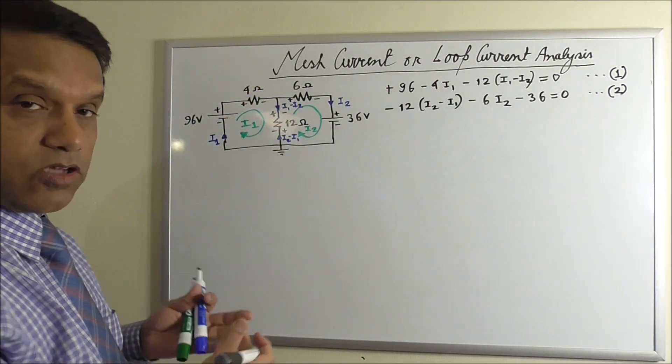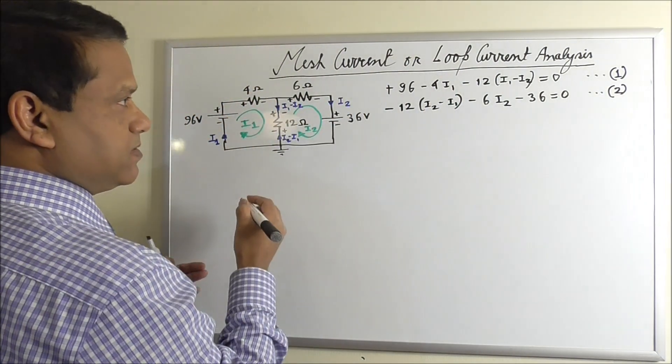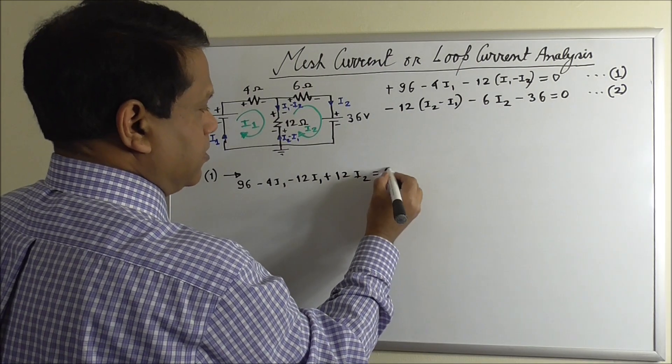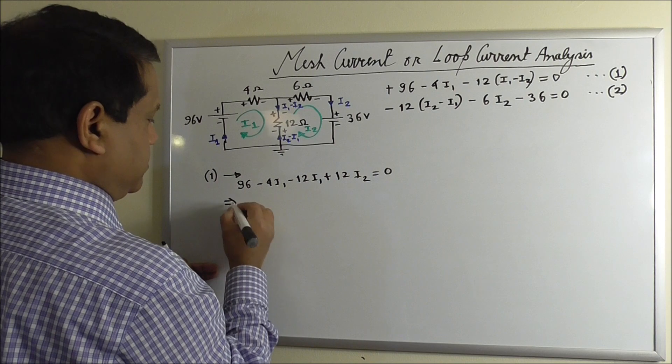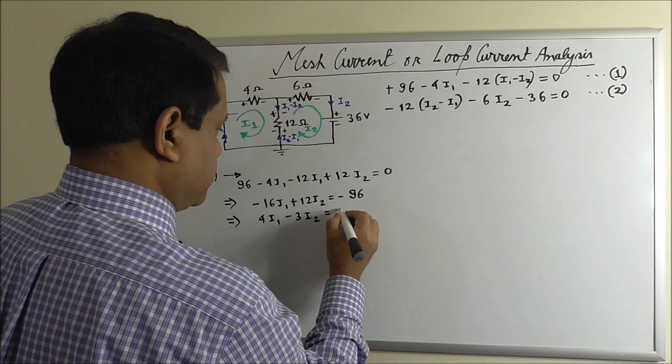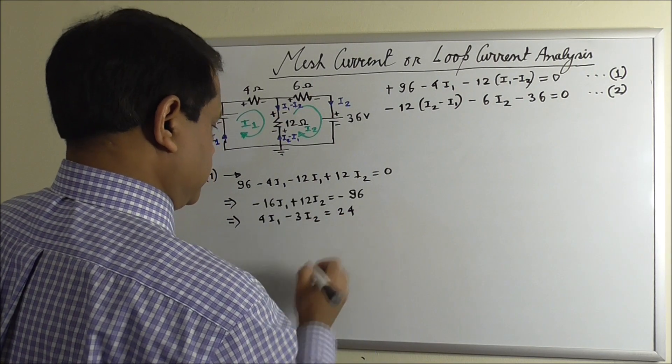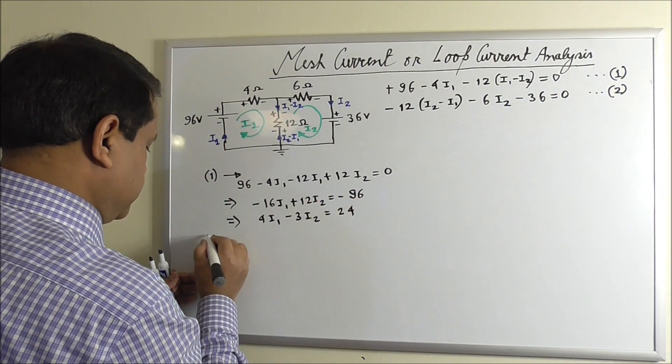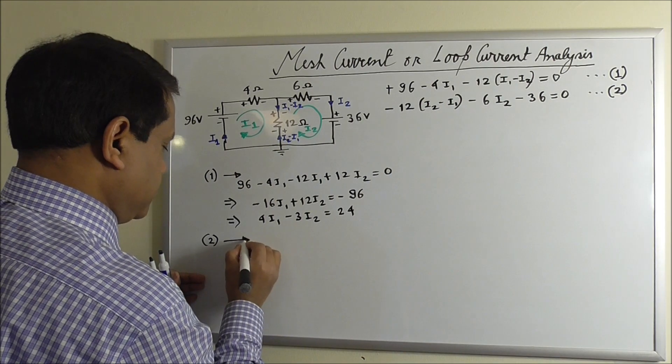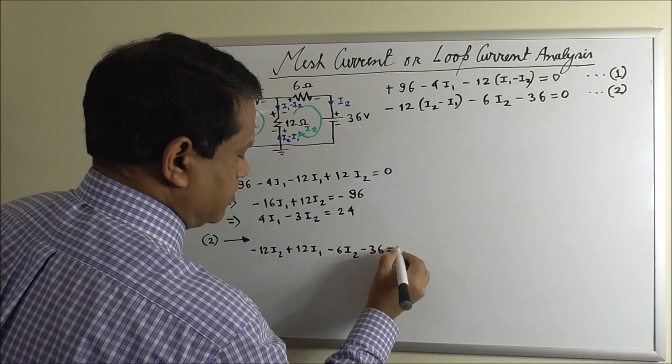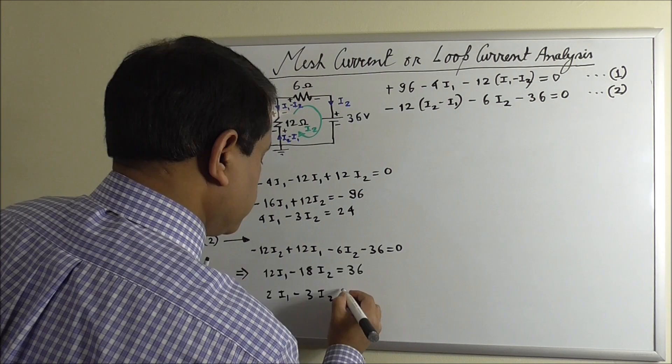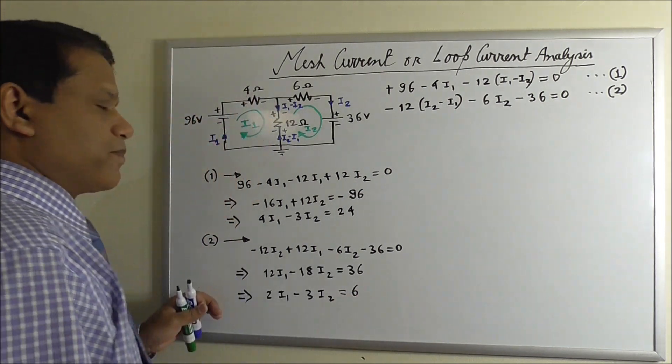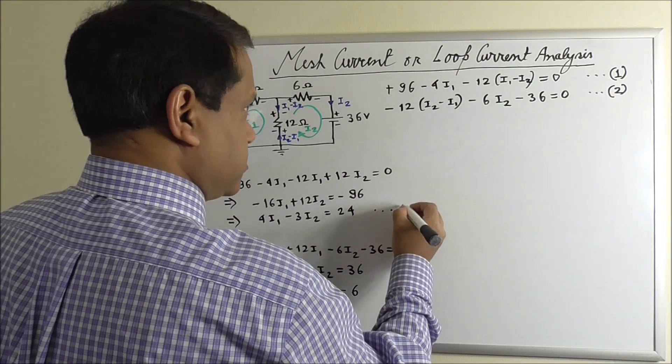From 1 and 2, we can solve these two variables. We can write equation 1, 96 - 4 I1 - 12 (I1 - I2) = 0. And from equation 2.